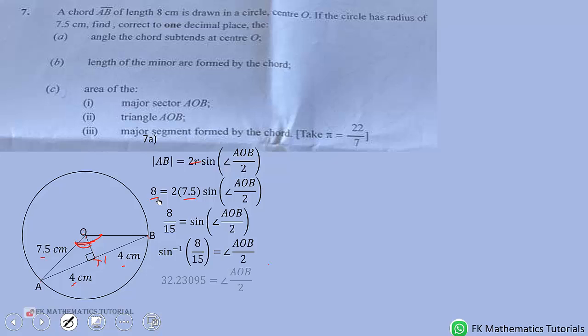So sine inverse of 8 over 15 is 32.23095. Multiply through by 2 to get angle AOB to be 64.4619. Now to one decimal place, it will be 64.5 degrees.